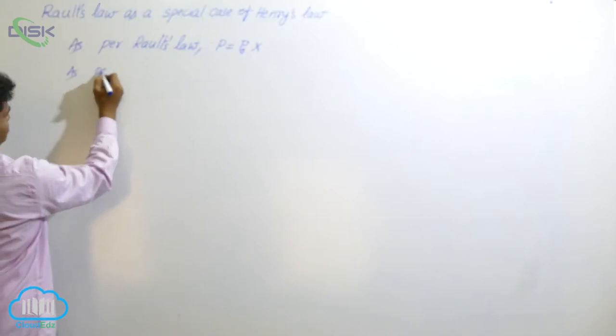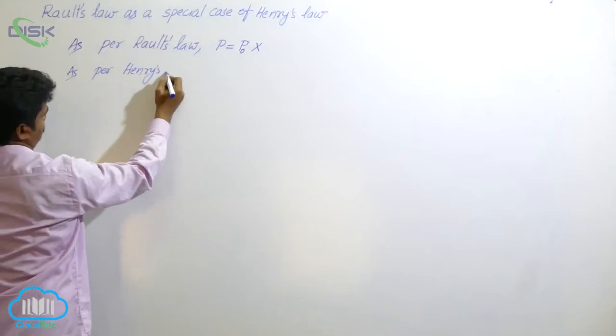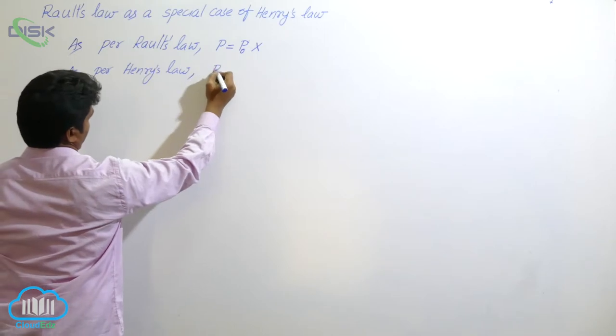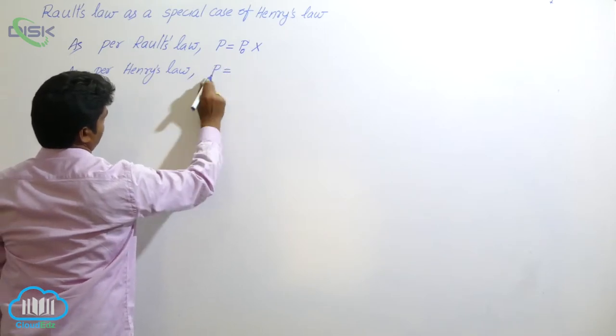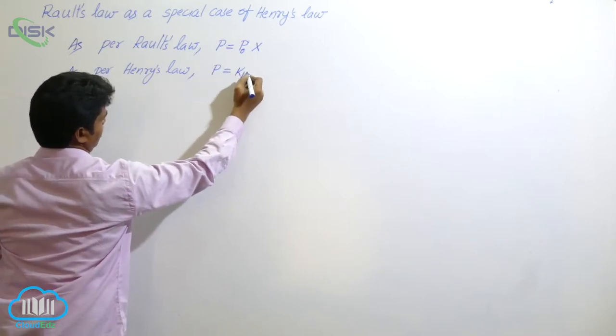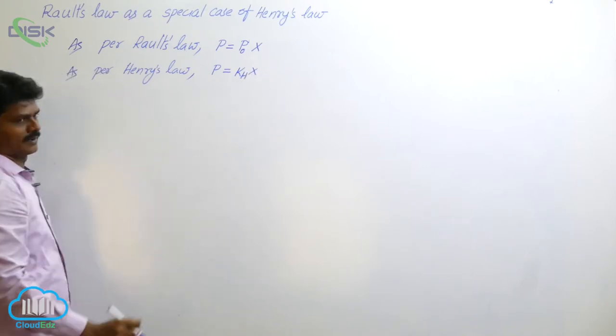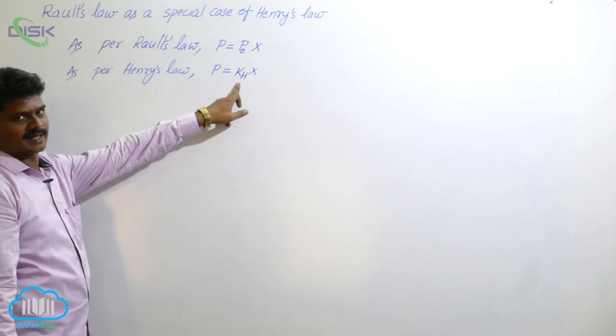As per Henry's Law, we have partial pressure is equal to kh times x, where kh is Henry's Law constant.